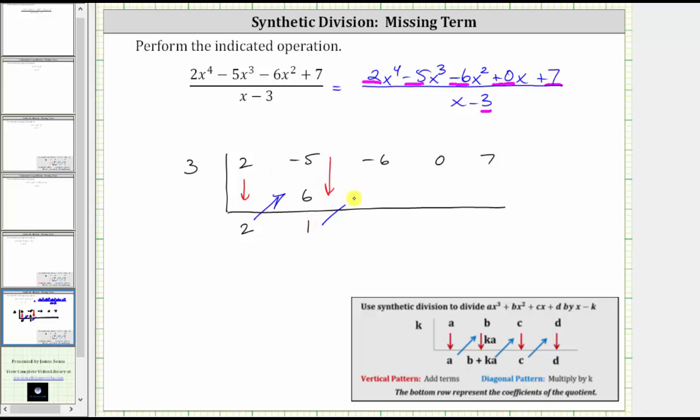Again, the diagonal pattern is to multiply by k. One times three is three. And then we add. Negative six plus three is negative three.